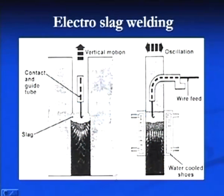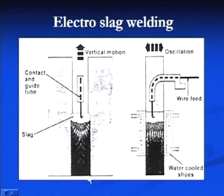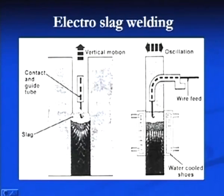In electro slag welding, this is a single pass welding process normally used for joining thick sheets. Initially an arc is established between the backing plate and the consumable electrode. The heat generated by the arc is used to melt the granular flux, and when the molten flux forms a pool, the arc is extinguished. Then heat is generated by electrical resistance heating, which develops a temperature of around 2000 degrees centigrade.